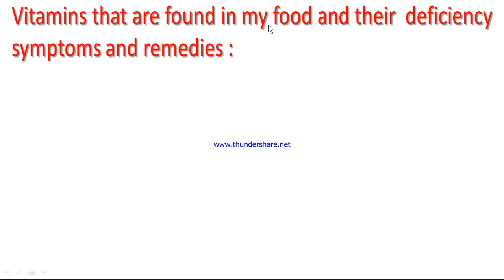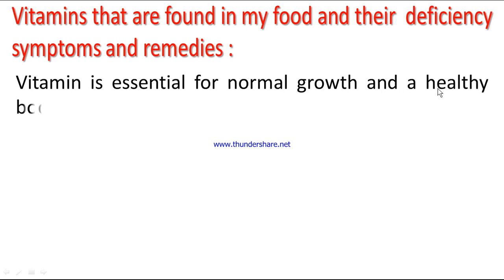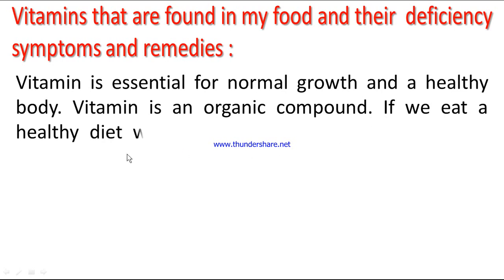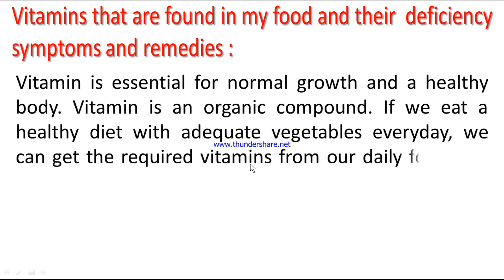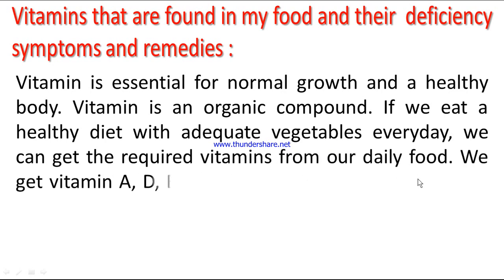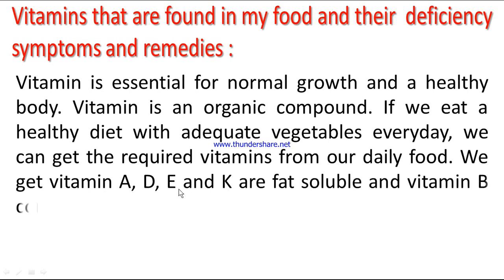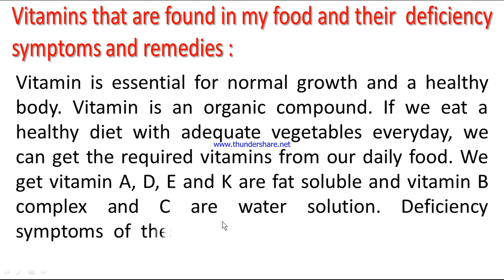Vitamins found in the daily diet and their deficiency symptoms and remedies: Vitamin is essential for normal growth and a healthy body. Vitamin is an organic compound; if we eat a healthy diet with adequate vegetables every day, we can get the required vitamins from our daily food. Vitamins A, D, E, and K are fat-soluble, and Vitamin B complex and C are water-soluble.